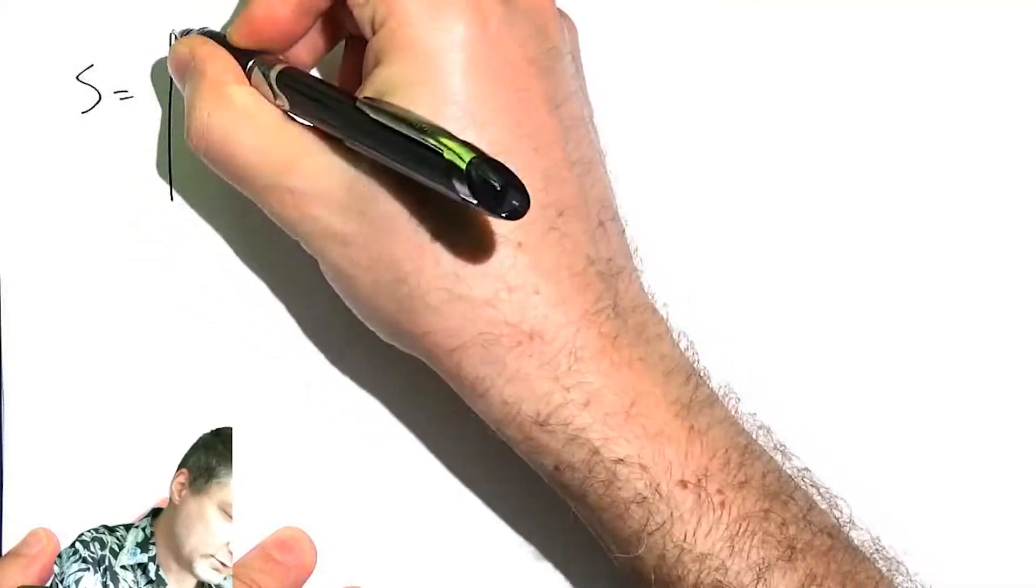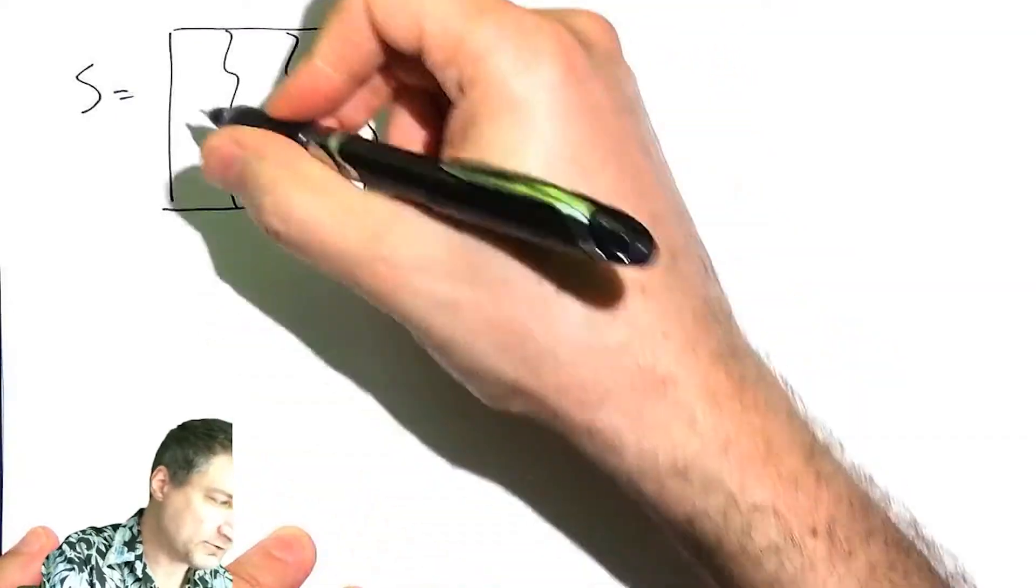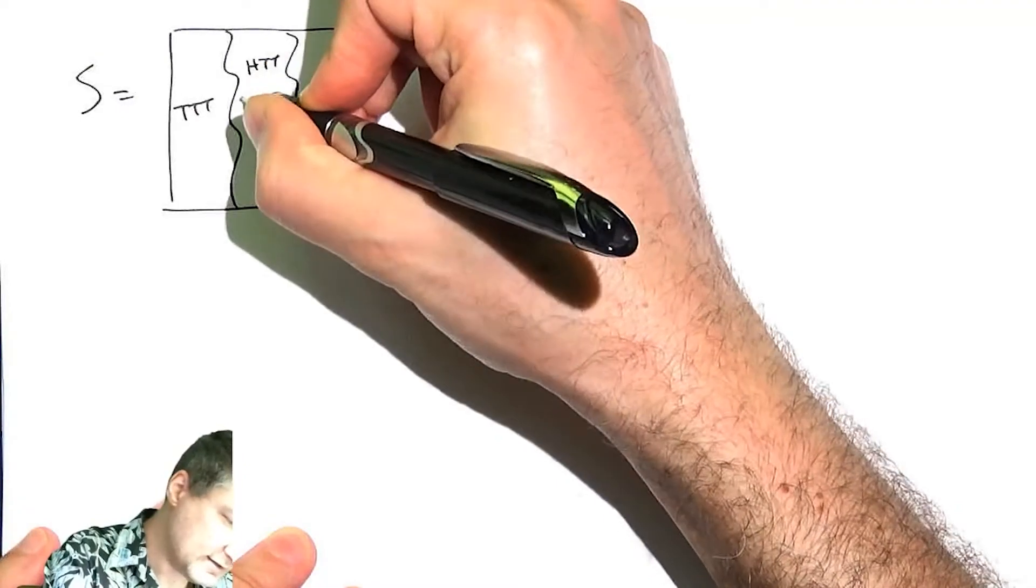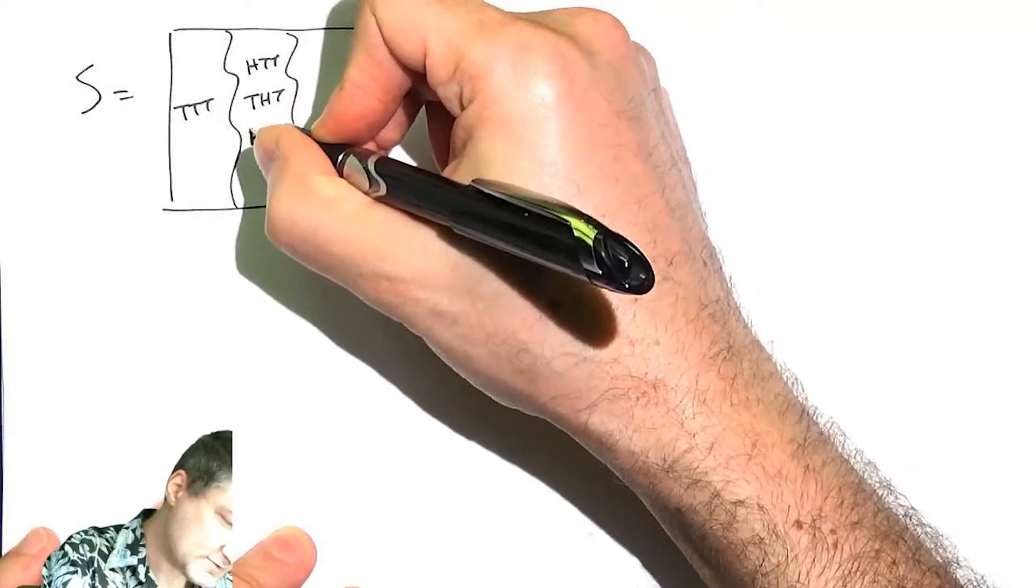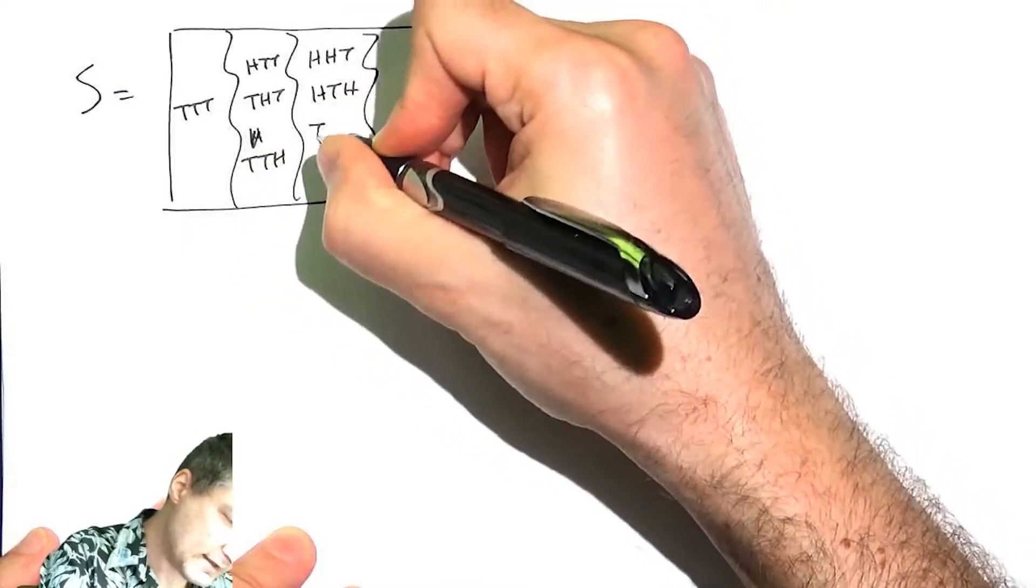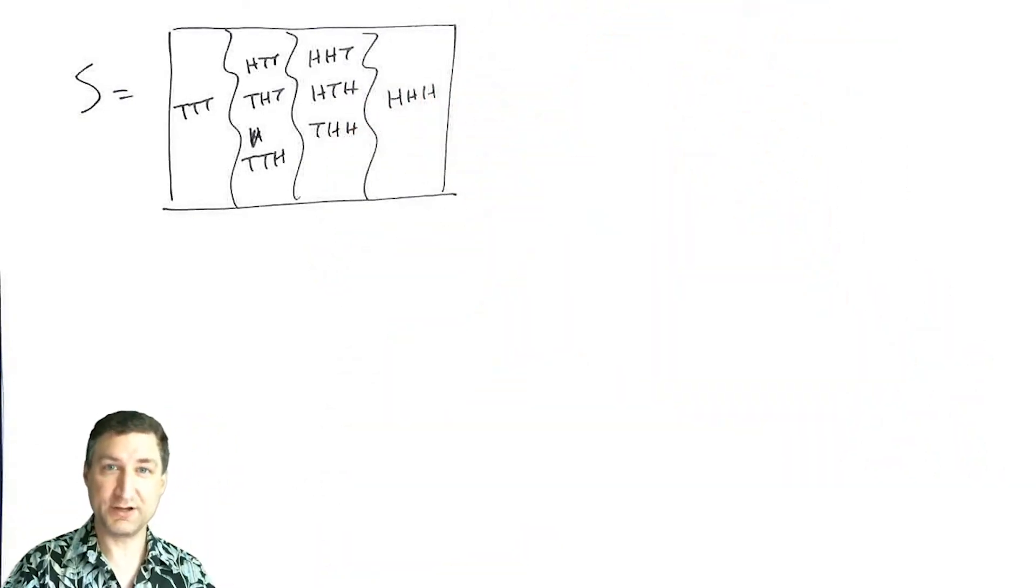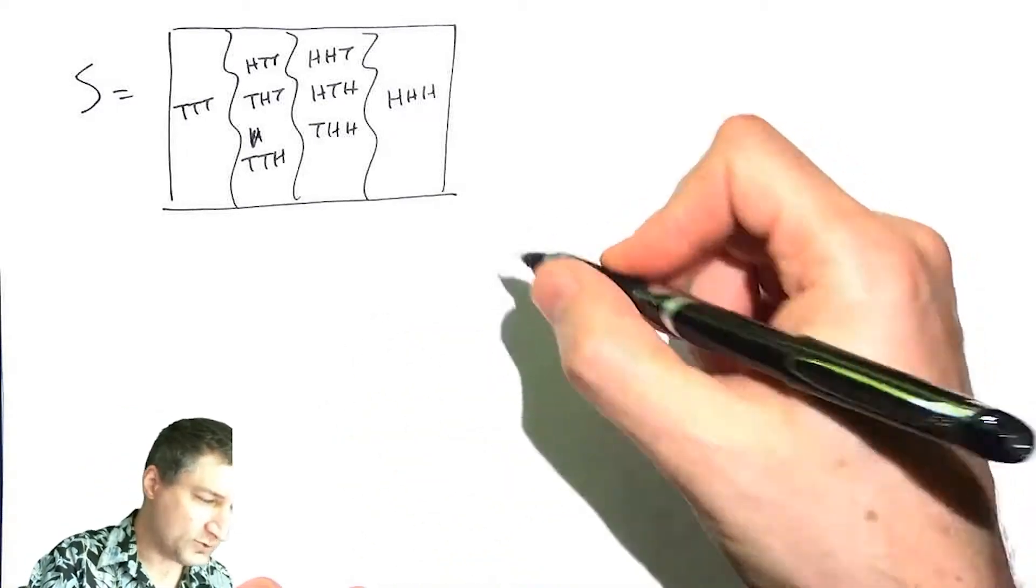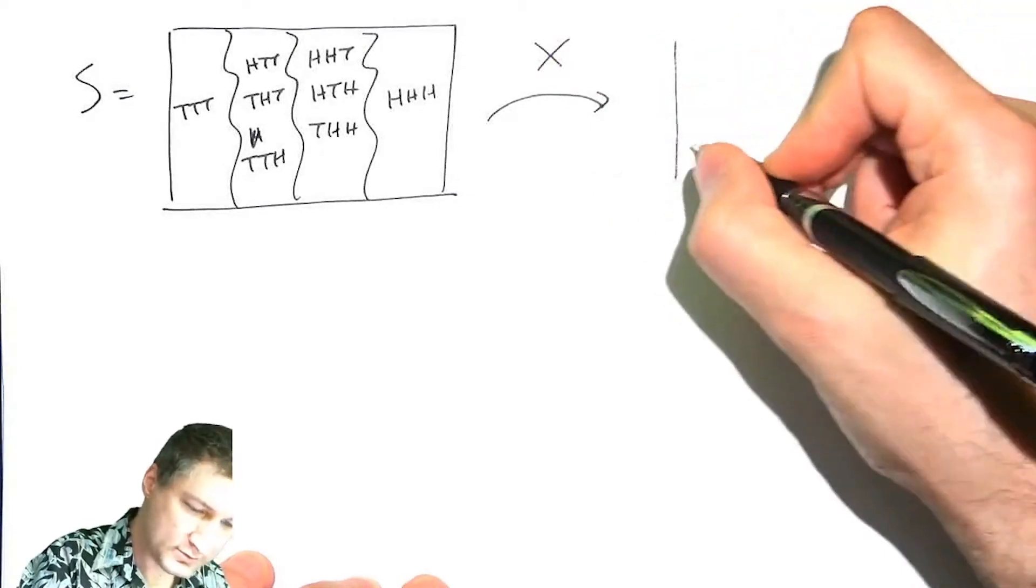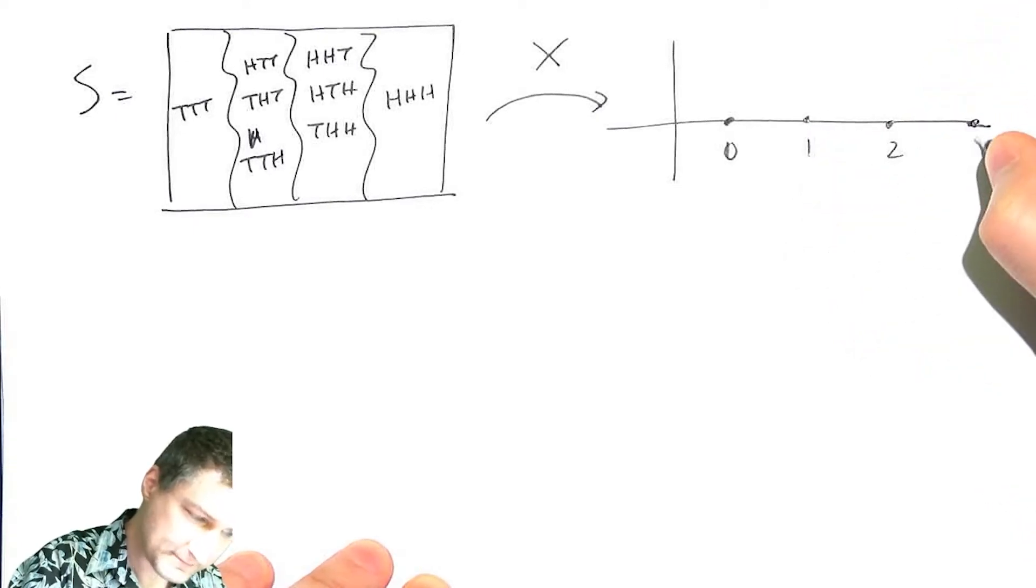I have the old sample space. The old sample space had eight outcomes originally, flipping coins. I had tail, tail, tail; head, tail, tail; head, tail, head; tail, tail, head. And then I have cases where I have two heads and cases where I have three heads. This we said is not a random variable because it doesn't have numerical values. So this maps via the random variable into the number line, which has the possibilities 0, 1, 2, 3.